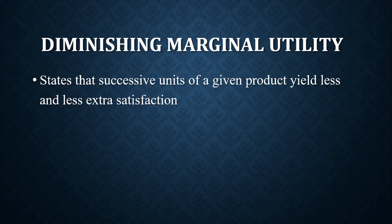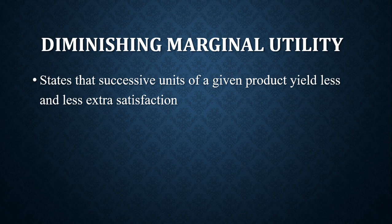The last explanation is the diminishing marginal utility effect. It states that successive units of a given product yield less and less extra satisfaction. Every consumer is assumed to be rational — you are willing to pay a very high price for a commodity that gives you high satisfaction, and a low price for a commodity that gives you lower satisfaction.